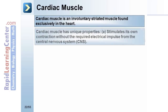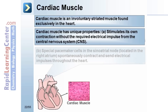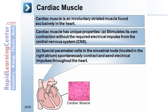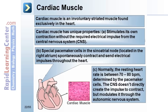Cardiac muscle is an involuntary striated muscle found exclusively in the heart. It has unique properties: it stimulates its own contraction without a required electrical impulse from the central nervous system, and special pacemaker cells in the sinoatrial node, located in the right atrium, spontaneously contract and send electrical impulses through the heart. Normally, the resting heart rate is between 70 and 80 beats per minute, determined by the pacemaker cells. The CNS modulates contractions through the autonomic nervous system.